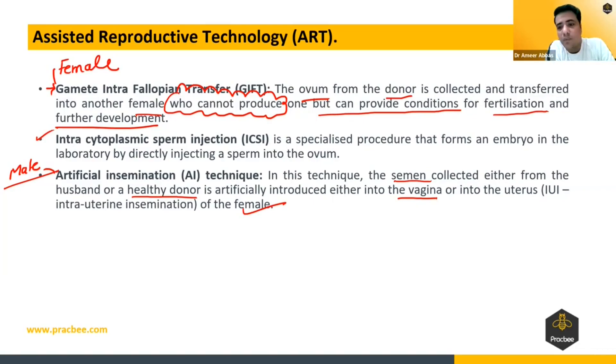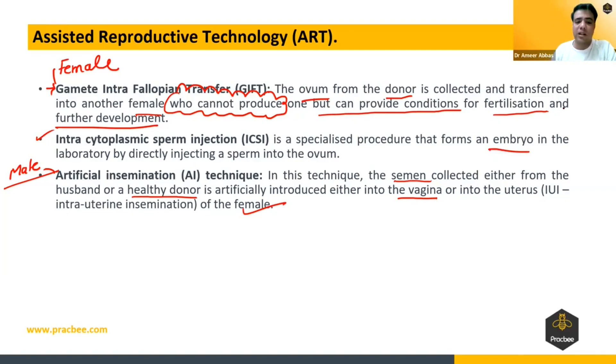The last technique is Intracytoplasmic Sperm Injection, where the sperm is injected directly into the cytoplasm of the ovum. Once the embryo is produced it is transported into the female uterus.